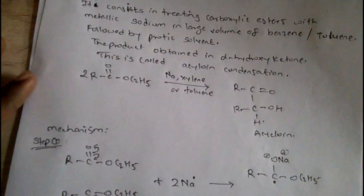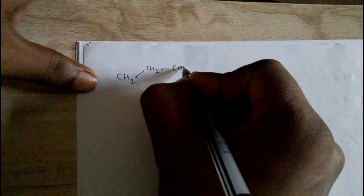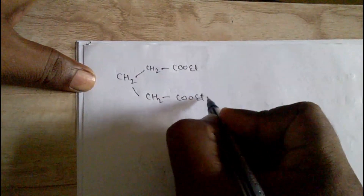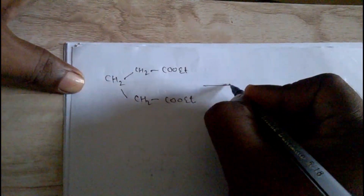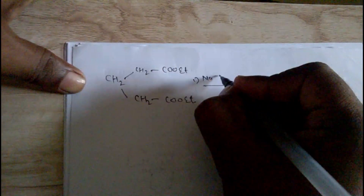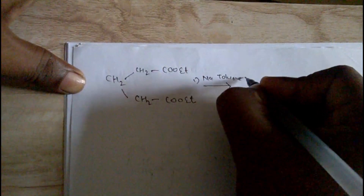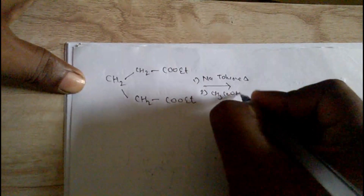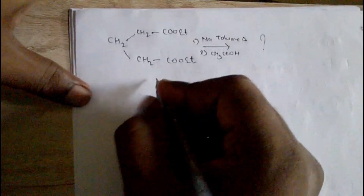Now we can take another example. Suppose we take ethyl propanoate, CH₃CH₂COOEt, treated first with sodium in toluene with heat, and second with acetic acid. What is the product? Let's see the mechanism.